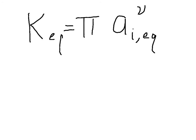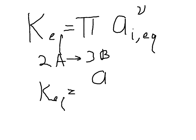For instance, if we had 2A goes to 3B, we would say that K equilibrium is equal to the activity of B at equilibrium cubed over the activity of A at equilibrium squared.